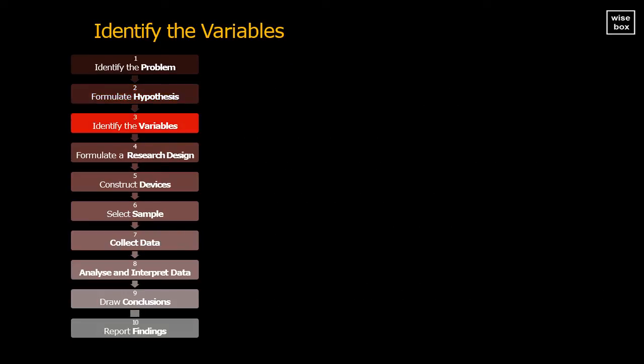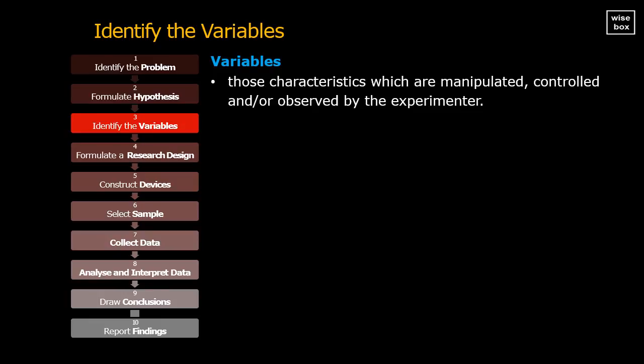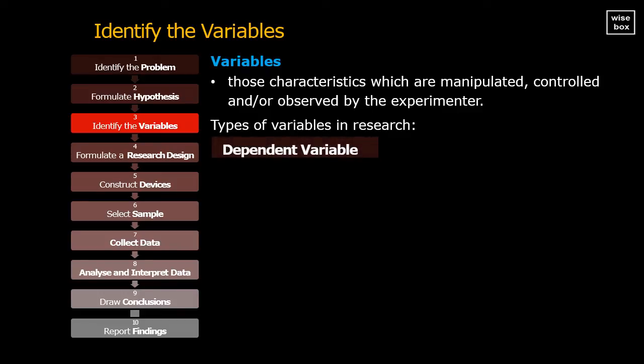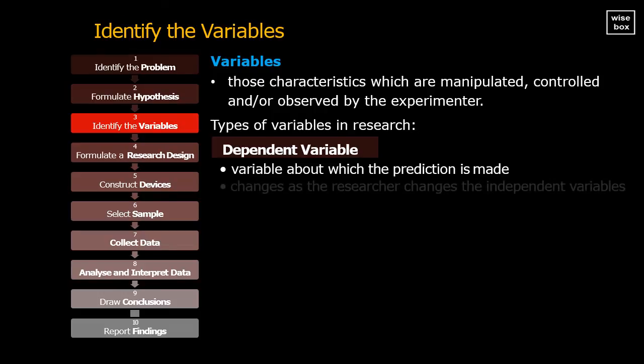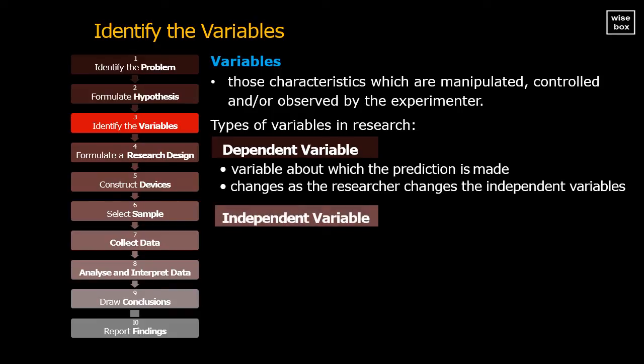The next step in the research process is to identify the variables. These variables are those characteristics which are manipulated, controlled, or observed by the experimenter. Three sets of variables are recognized at the beginning of research. The dependent variable: This is a variable about which the prediction is made, on the basis of the experiment. It is the characteristic, or condition, that changes, as the researcher changes the independent variables. The independent variable: It is the condition, or characteristic, which is manipulated, or selected, to find out its relationship to some observed phenomena.